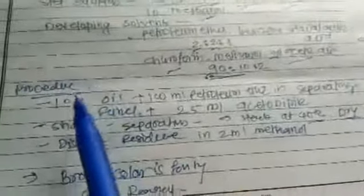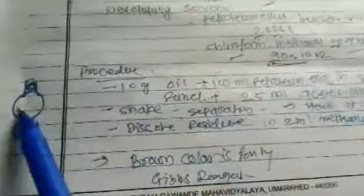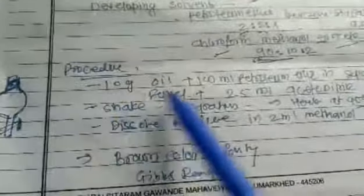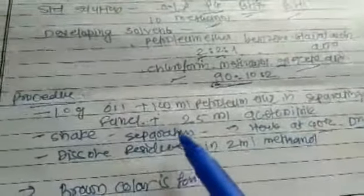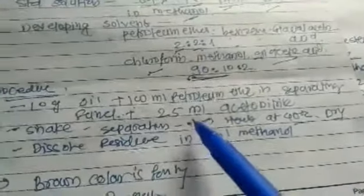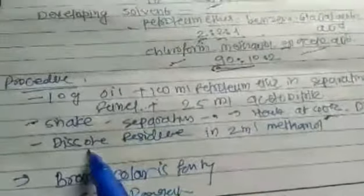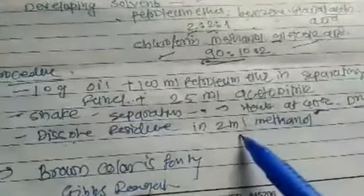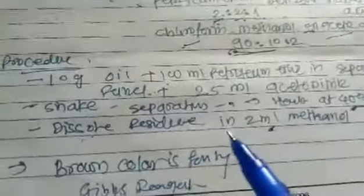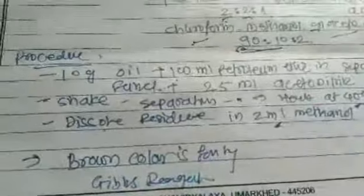For the TLC procedure, take 10 grams of oil in 100 ml petroleum ether in a separating funnel, plus 25 ml iso-propyl ether. Shake and after separation, filtrate it and heat it up to 40 degrees Celsius and dry it. After drying, dissolve the residue in 2 ml methanol, then run TLC. The coloring agent used is Gibbs reagent — 2,6-dichloroquinone with 0.1% alcohol. A brown color indicates antioxidant presence.